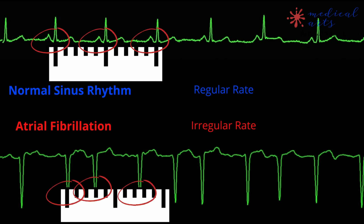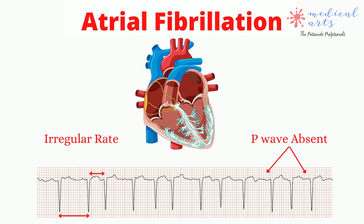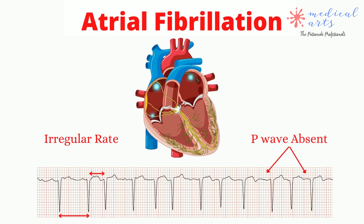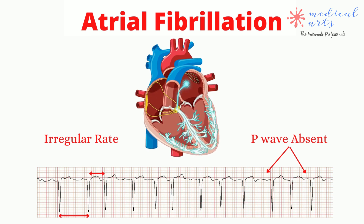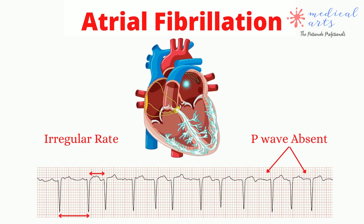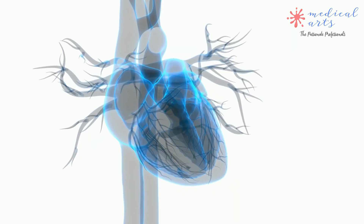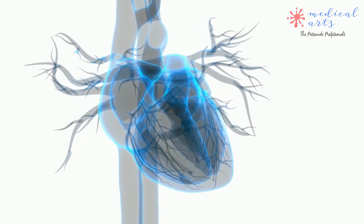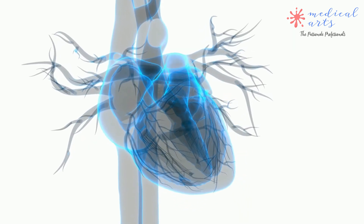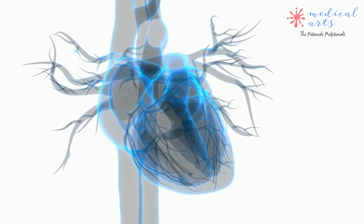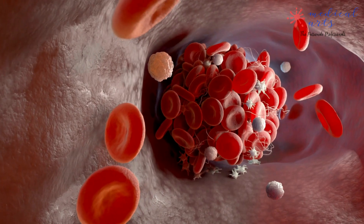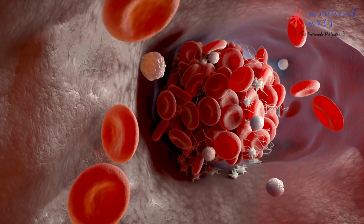To recap in one sentence: atrial fibrillation is distinguished by irregular heartbeats and absent P-waves. Slow atrial fibrillation is harmless, but if the atrial fibrillation has a heart rate faster than 100 beats per minute, it needs to be treated to avoid complications such as heart failure and strokes.